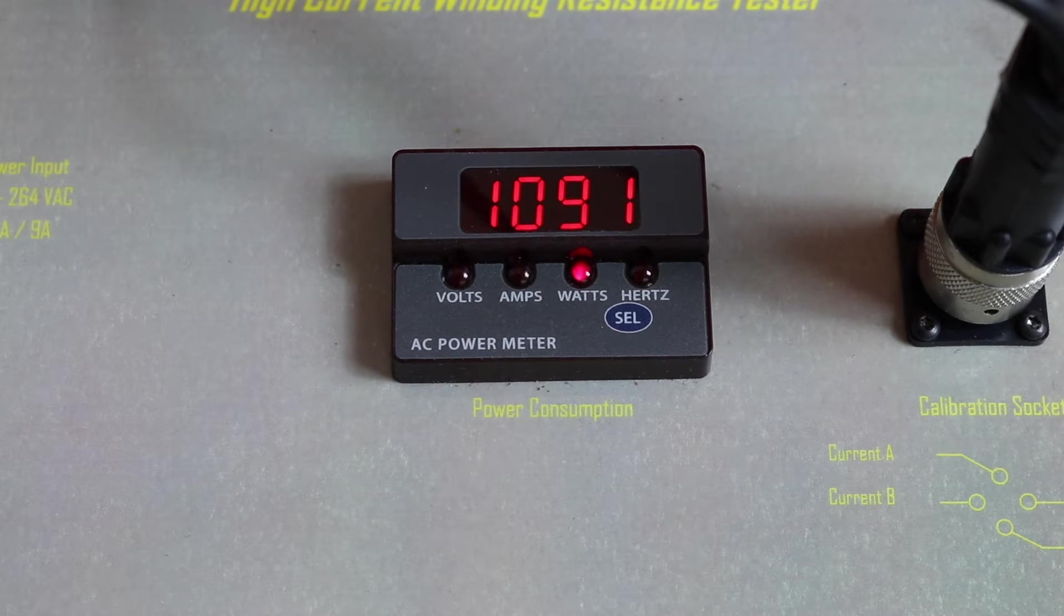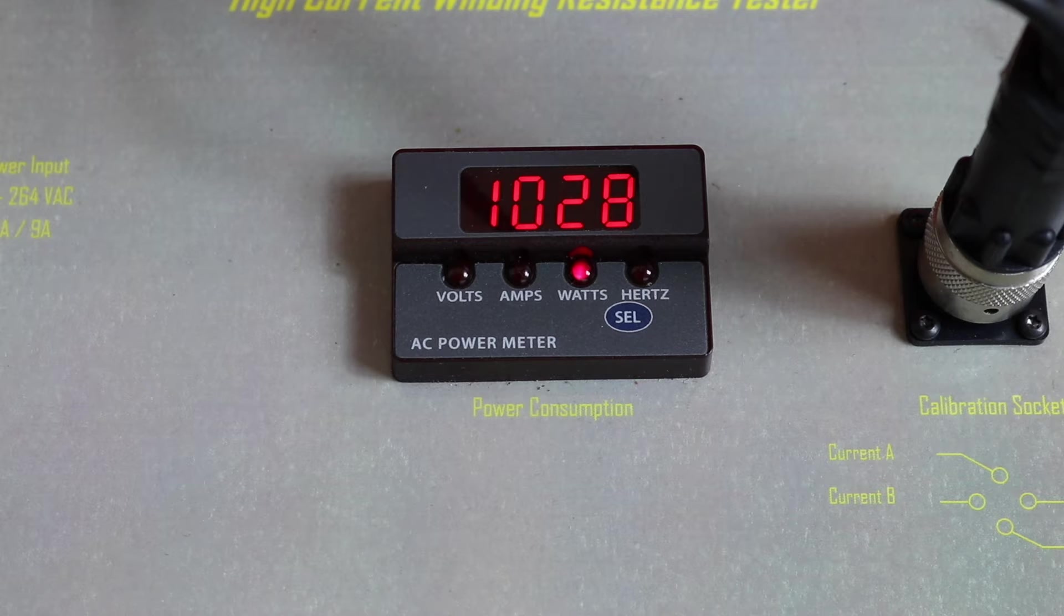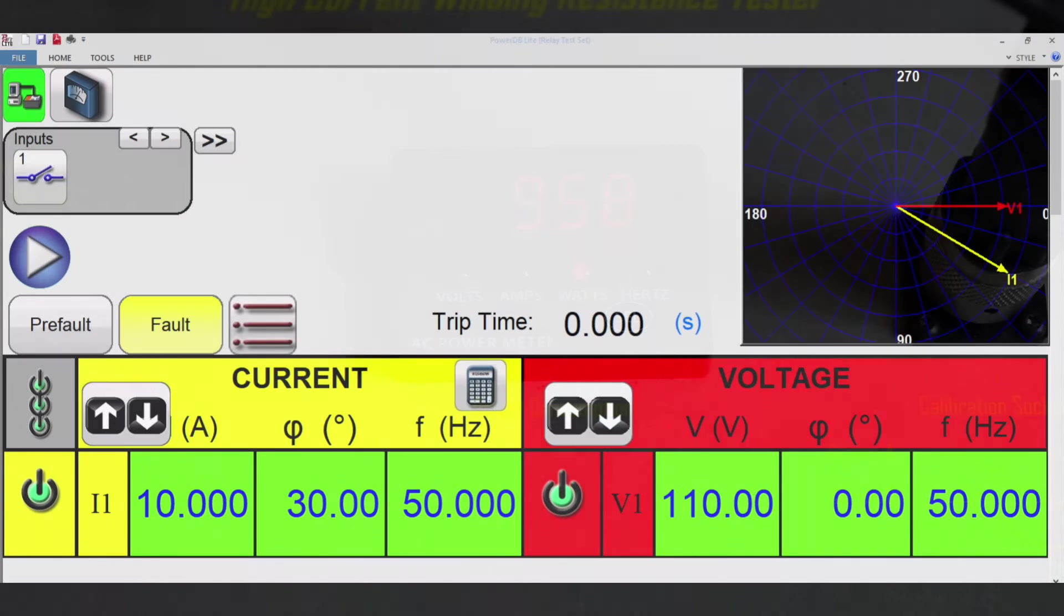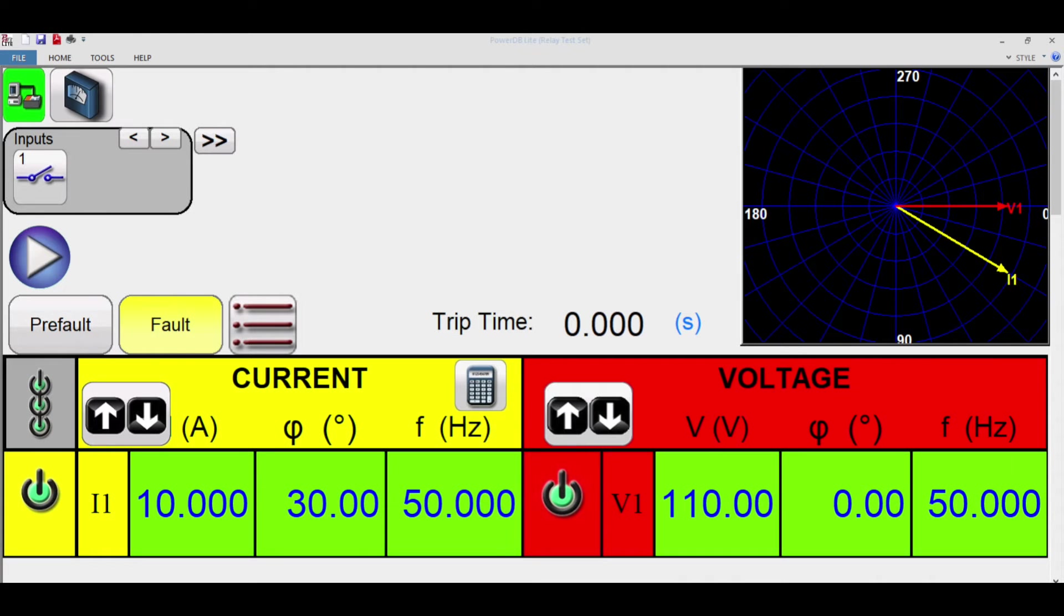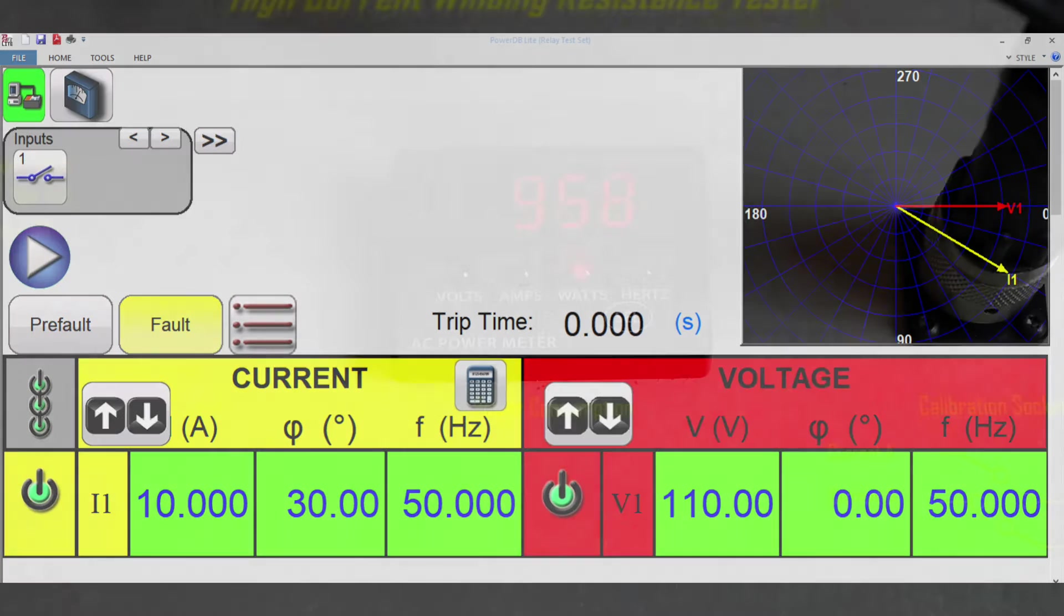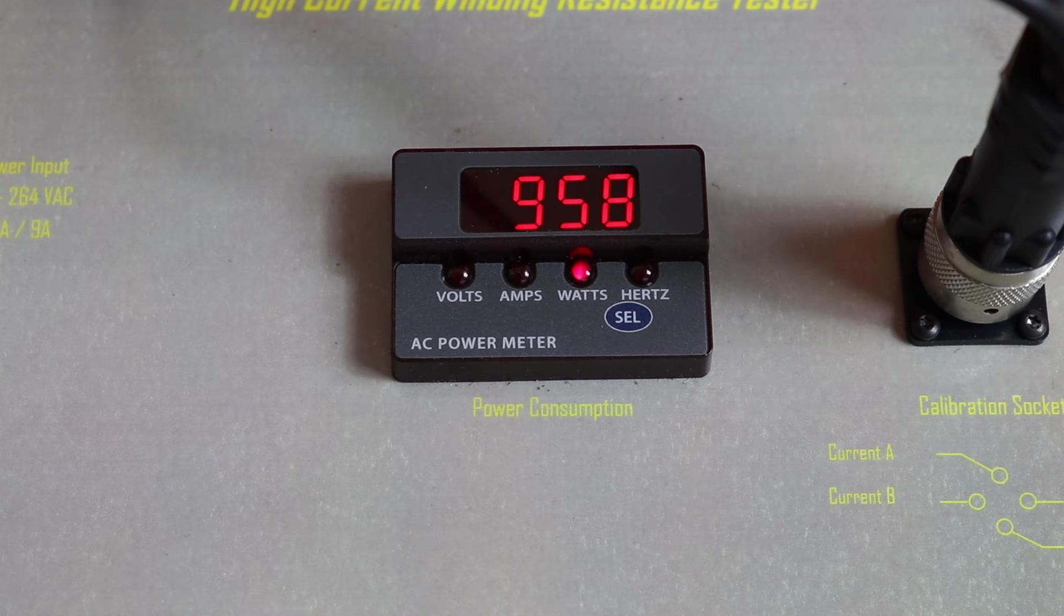If I change the angle on this and change it to 30 degrees, you can see that the watts will go down, 958 watts there. I'll put the screen up here from the injection test set so you can see what that's doing, but I can take a load of measurements now from different currents and voltages injected and see that the meter is working to the tolerance that I'd like it to.